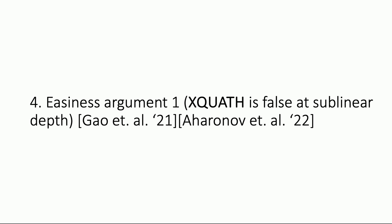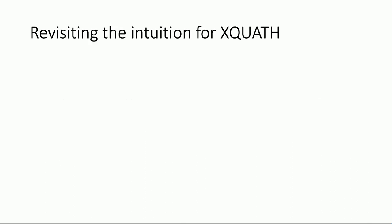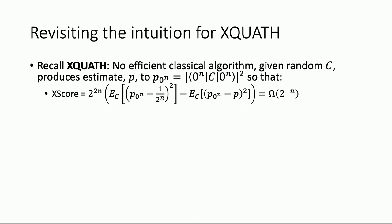Here's a surprise. There were many classical algorithms introduced for random circuits, and I found this one to be maybe the most surprising: XQuath, this conjecture, ends up being false at sublinear depth. The intuition was that the best thing you can do is write out the output probability as a path integral on the computational basis and subsample paths — take a small number of paths, evaluate each path's value, take an average, and accept if sufficiently large. The problem is there are too many paths to give any bias scaling like two to the minus N.